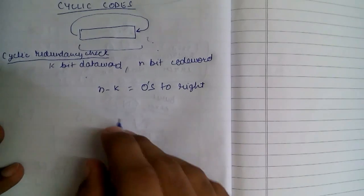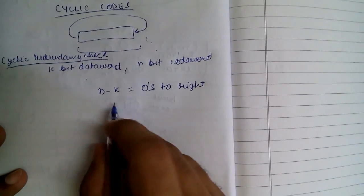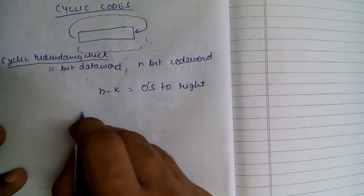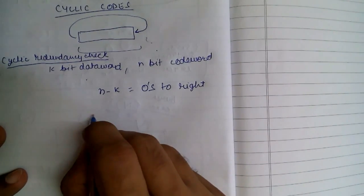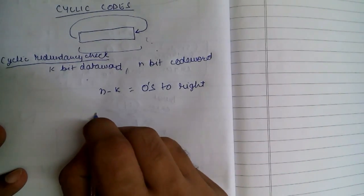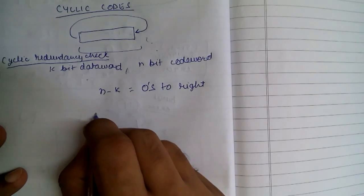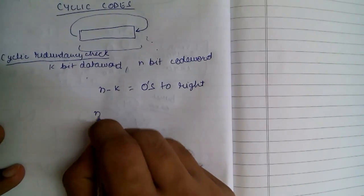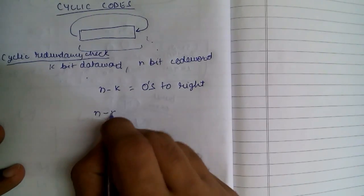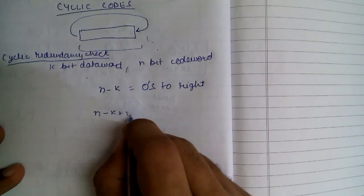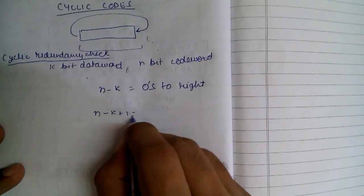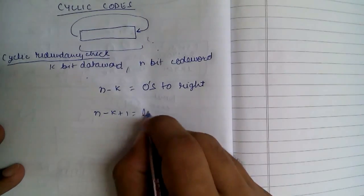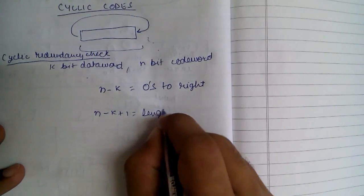We have a k-bit data word and there will also be a divisor used by the generator, with a divisor length of n minus k plus 1.